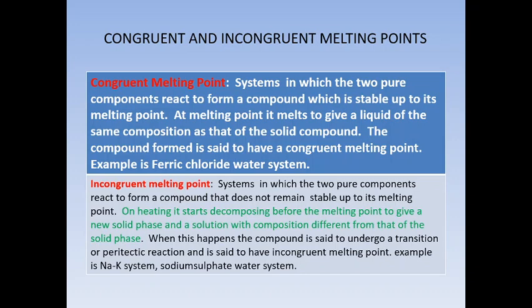A quick revision of congruent melting point: in systems where two pure components react to form a compound which is stable, the compound remains stable up to its melting point. At the melting point it melts to give a liquid of the same composition as that of the solid compound. The compound is said to have a congruent melting point. The example for this is the ferric chloride-water system, which we are going to discuss today.